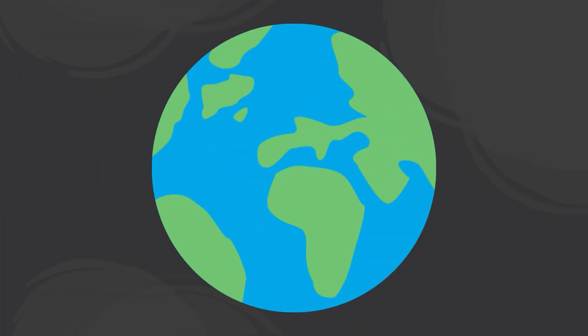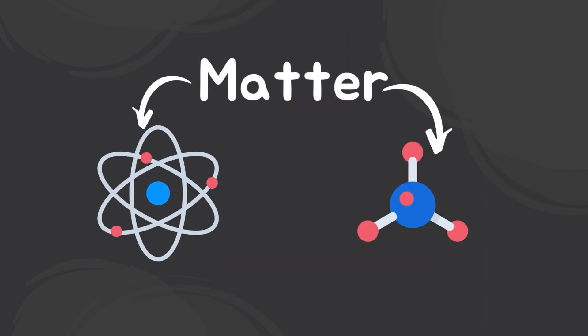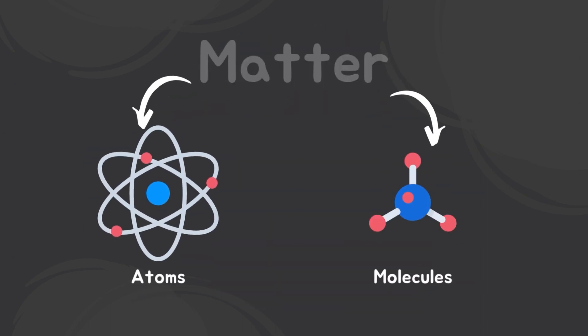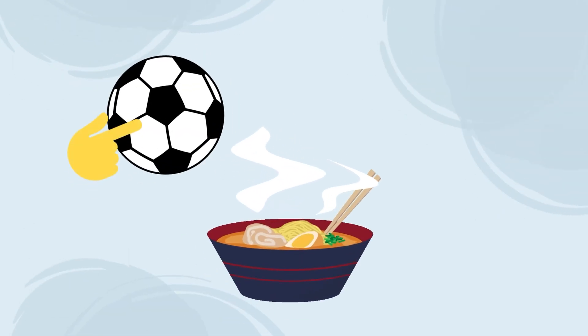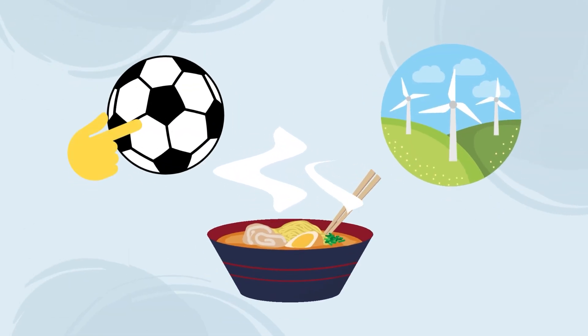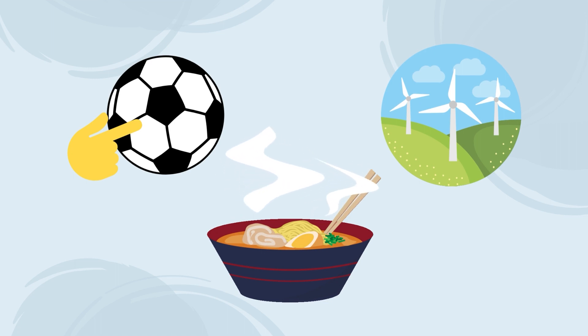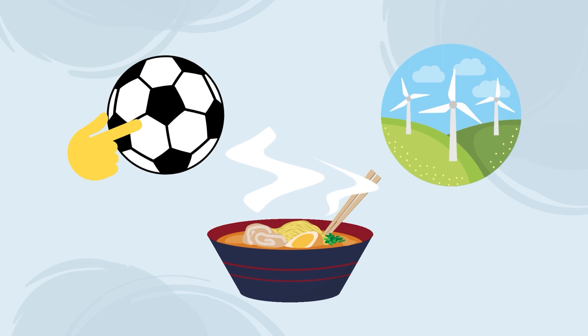Let's start at the beginning with matter. Everything that exists in the world is considered matter. Matter is made out of tiny particles called atoms and molecules. Everything that we touch, eat, and even the air around us is matter. Everything that exists, occupies space, and has some sort of mass is considered to be matter. Mass is how much matter something contains.